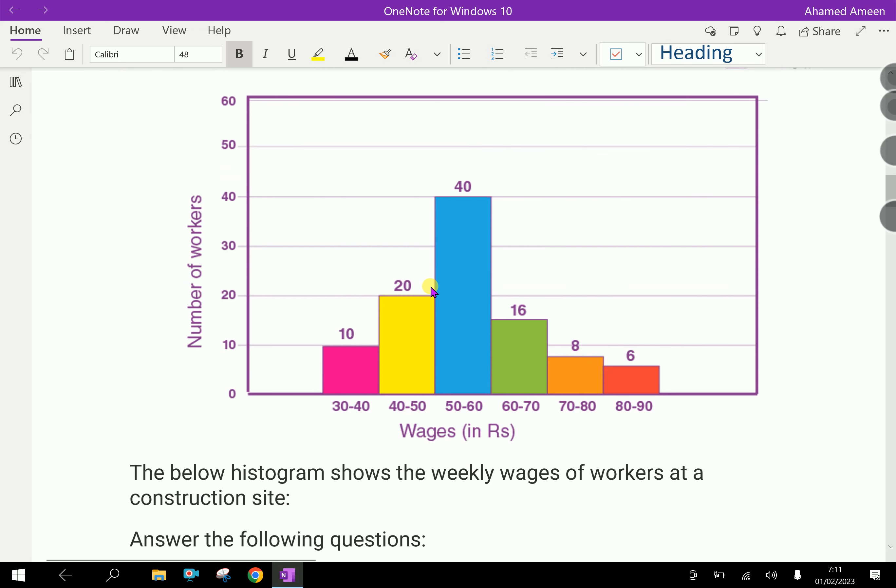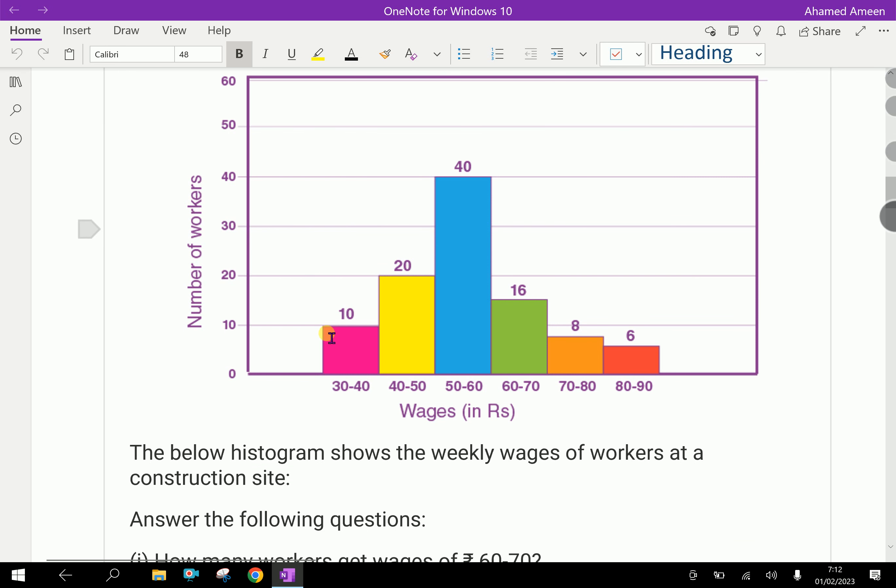Now, let us do an example problem. Look, this is the number of workers for their wages, weekly wages. This is the number of workers in terms of 10, 20, 40, and so on. And here, this is weekly wages in 30 to 40, 40 to 50, like distributions are there.